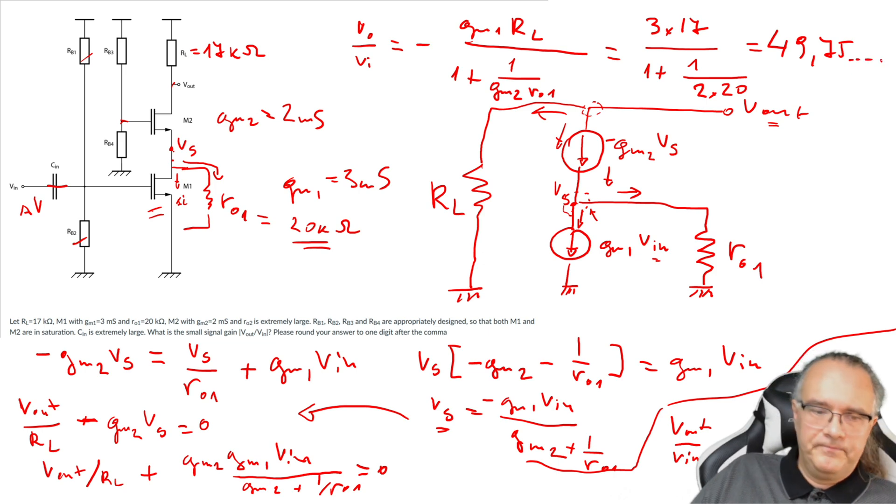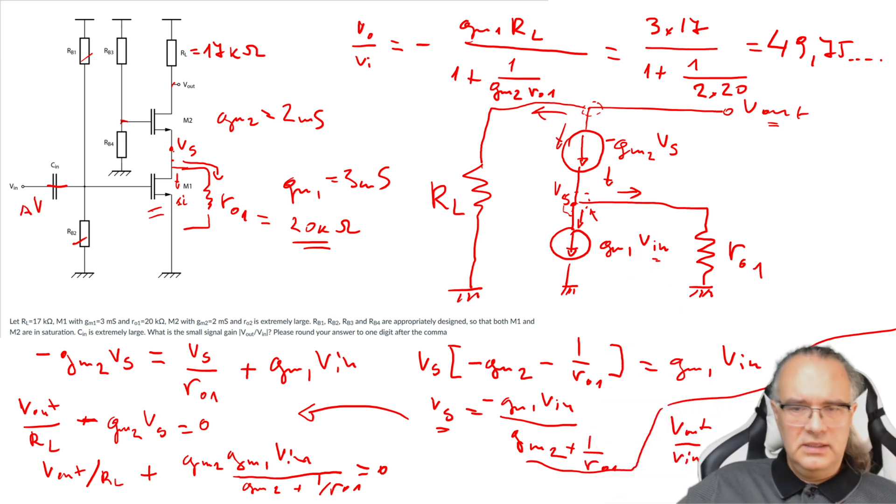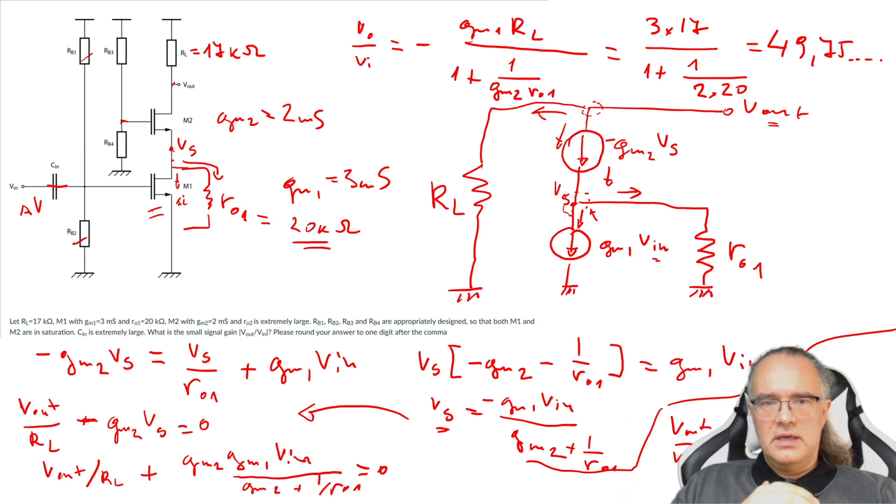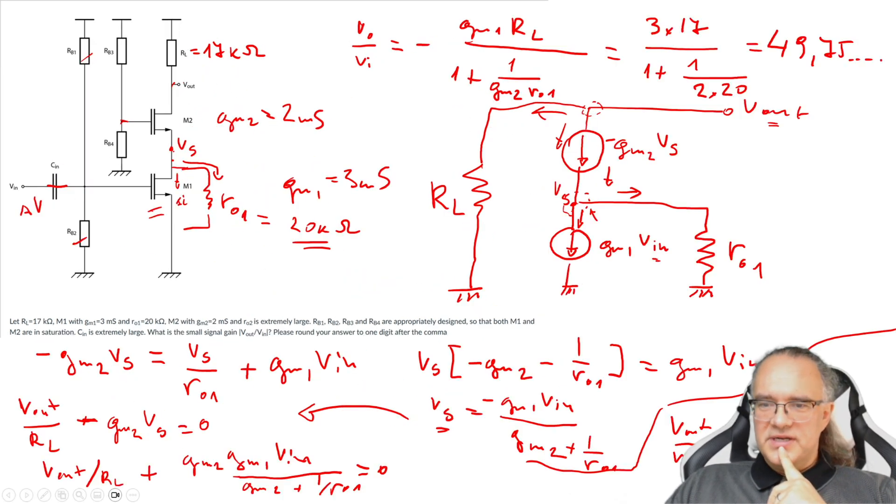And then something else. So you see here that if Rout is extremely large this becomes zero and the answer will be like in the previous problem. So this is for me this time. Thank you very much for your attention. Bye-bye.